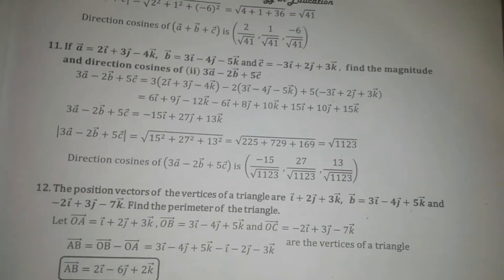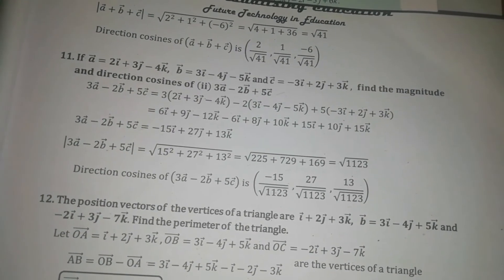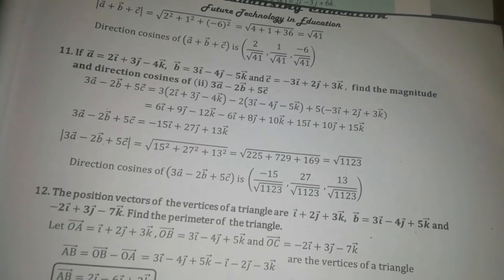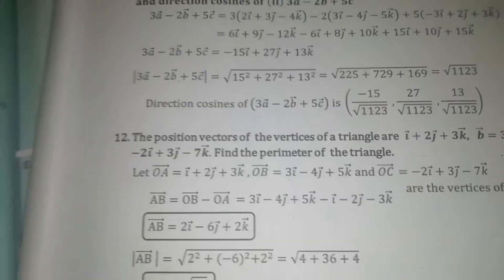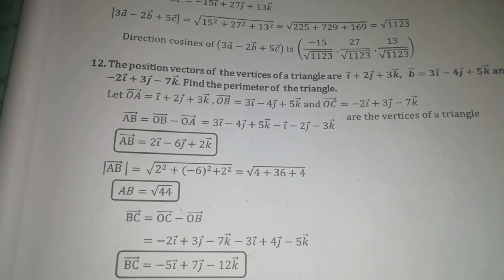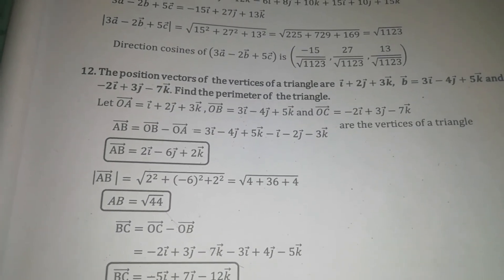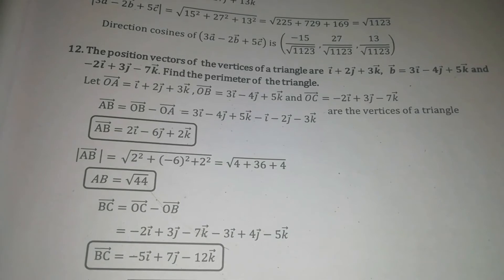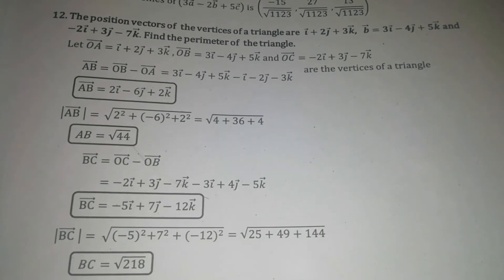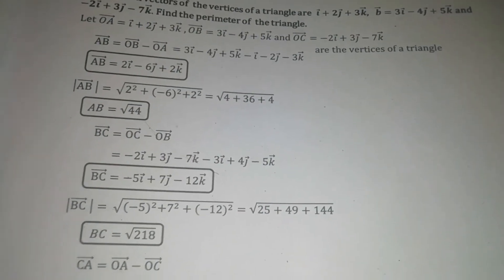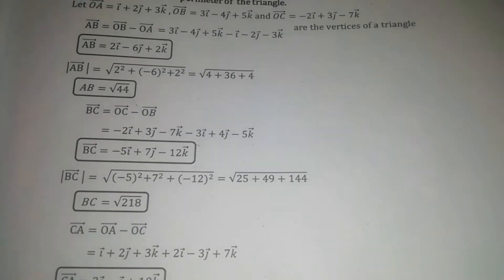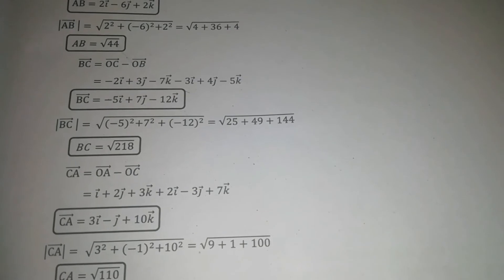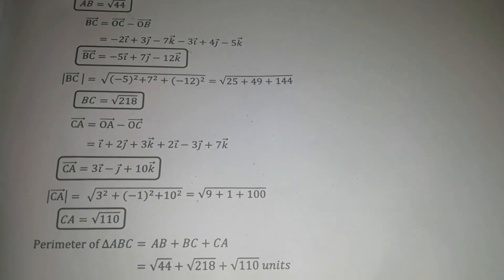Next, perimeter of a triangle — they are asking for the position vectors of the vertices. Perimeter means we find AB: OB minus OA, then find modulus of AB. Next BC: OC minus OB, find modulus of BC. Next CA: OA minus OC, find the modulus. Then add the three terms: AB plus BC plus CA gives the perimeter.